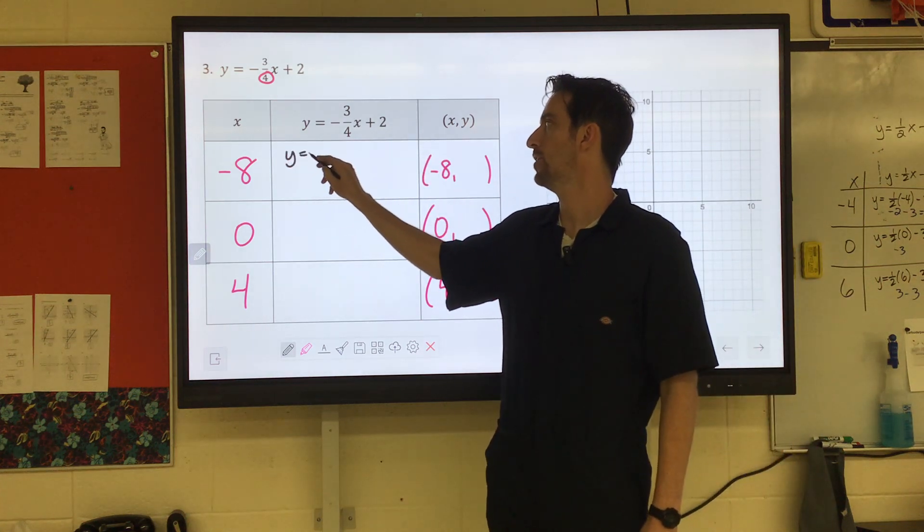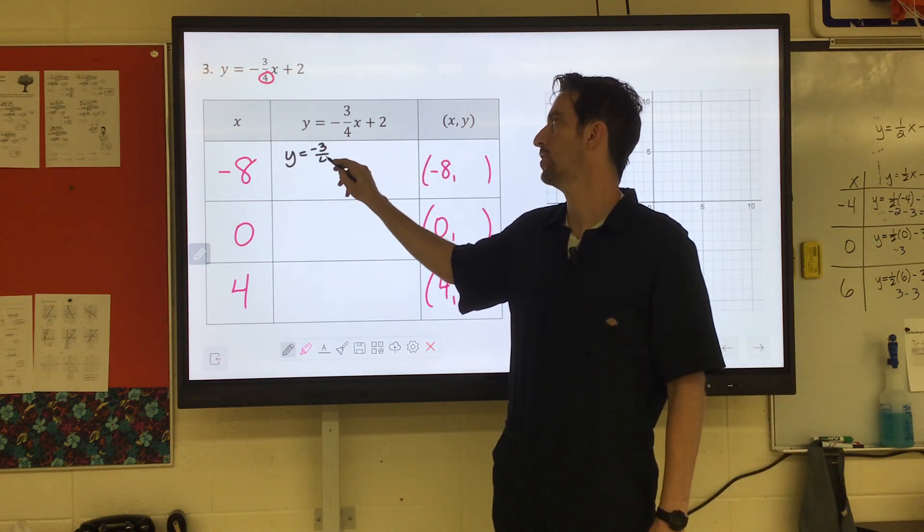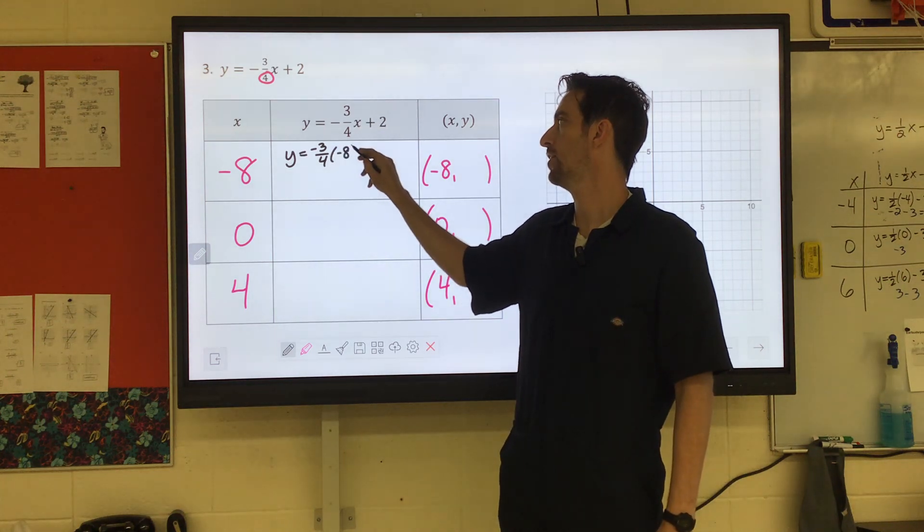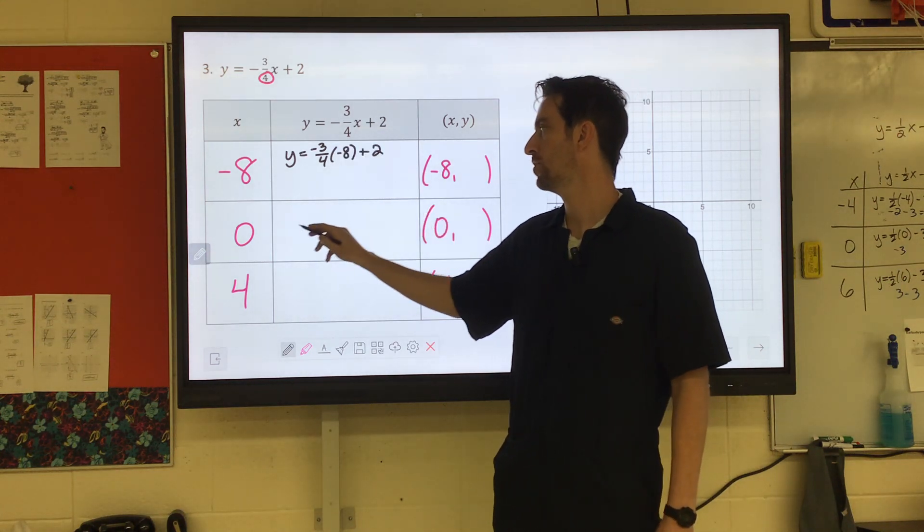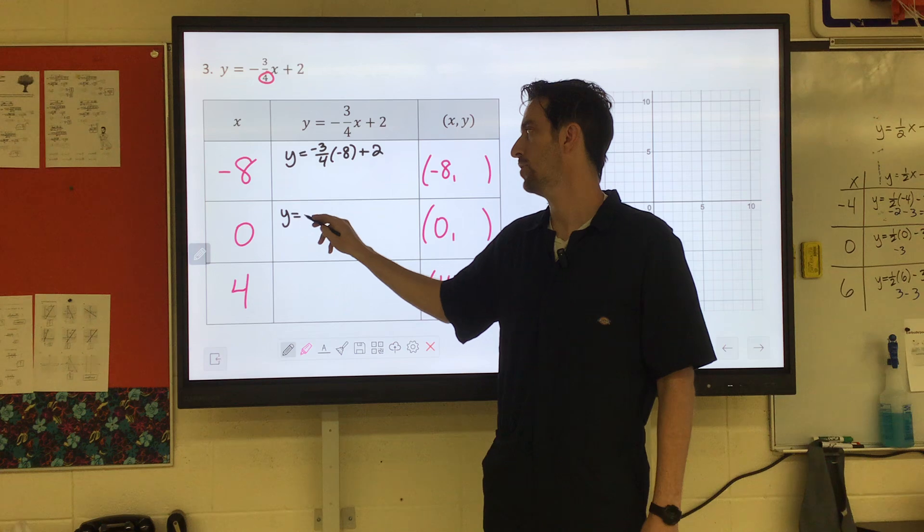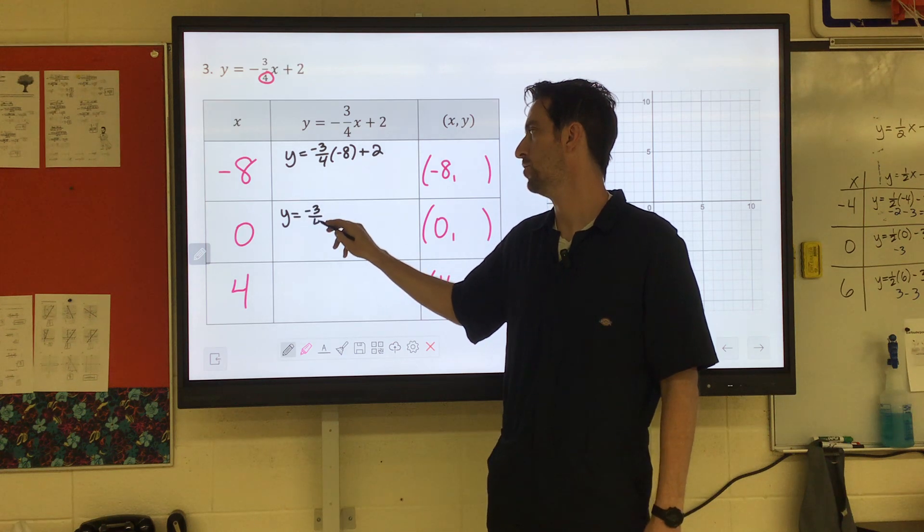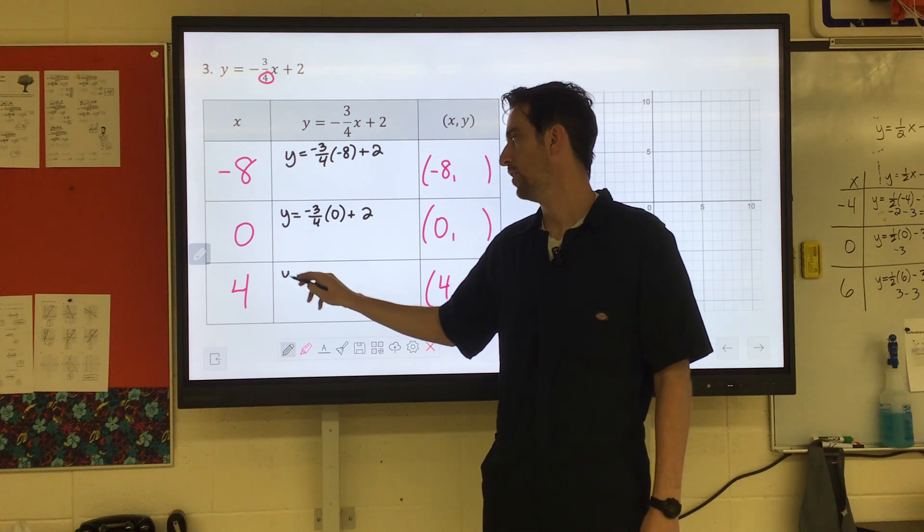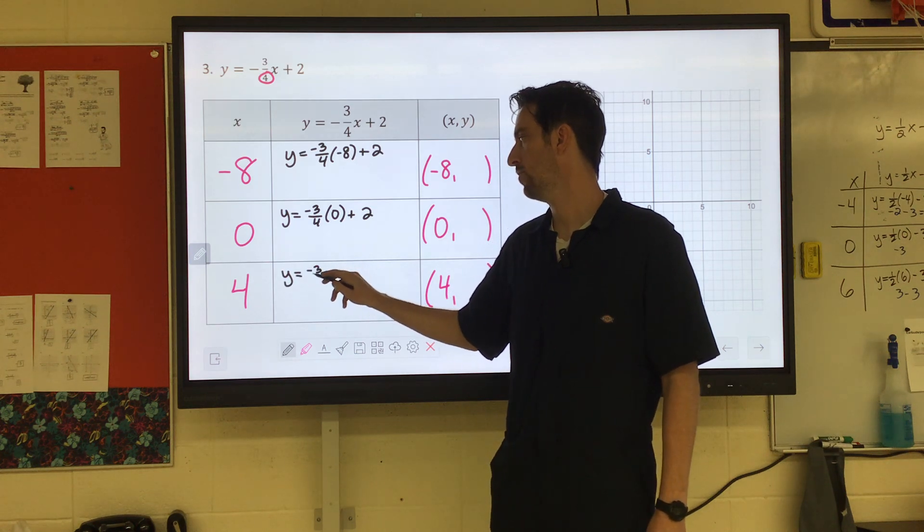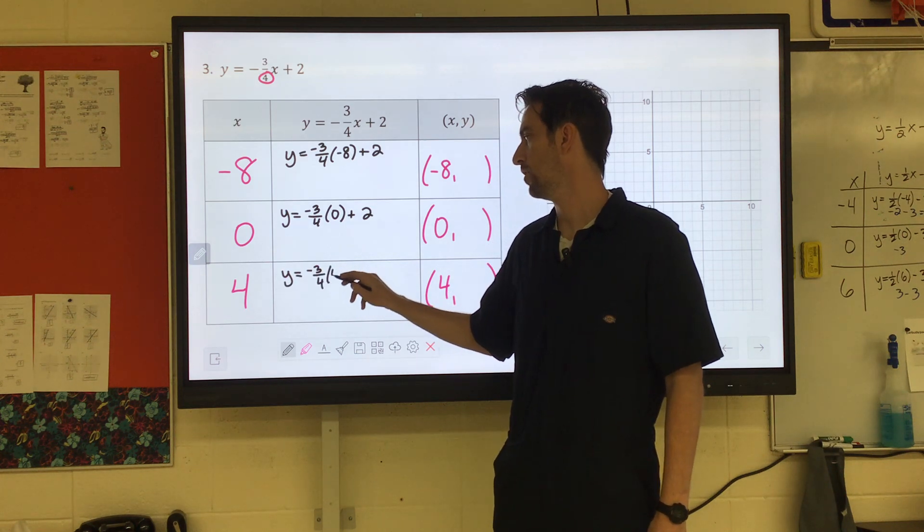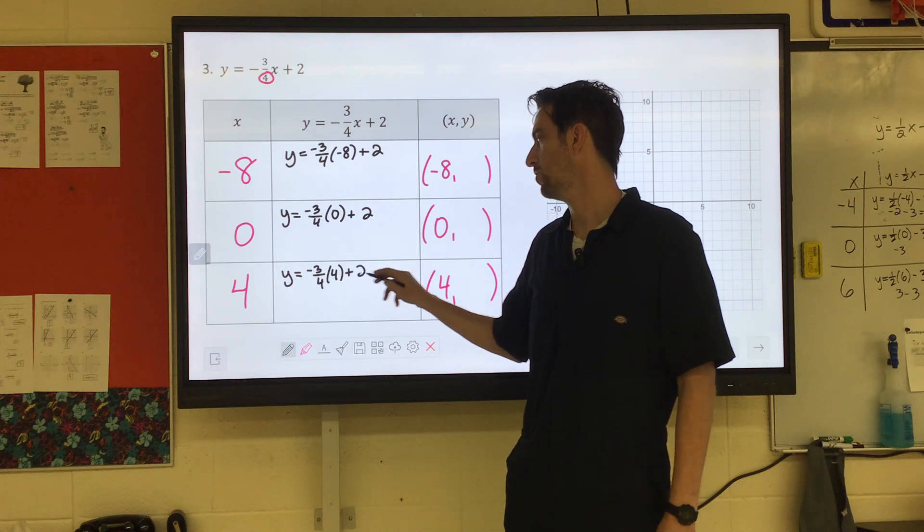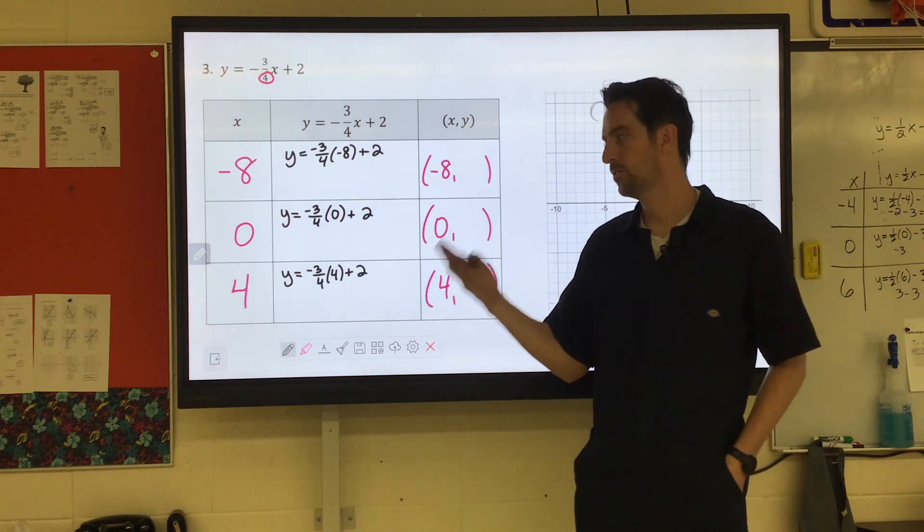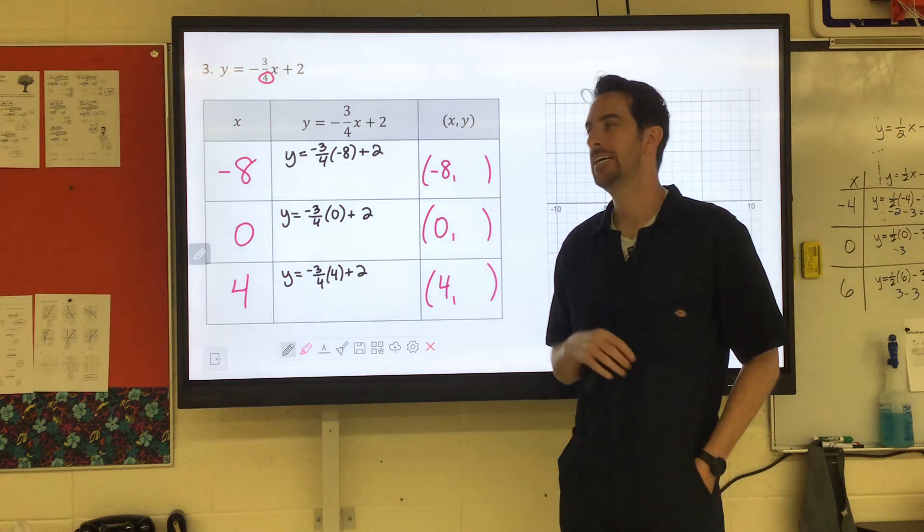So we'll have y equals negative three-fourths times negative eight plus two. We'll have y equals negative three-fourths times zero plus two, and y equals negative three-fourths times four plus two.